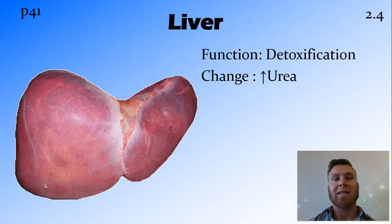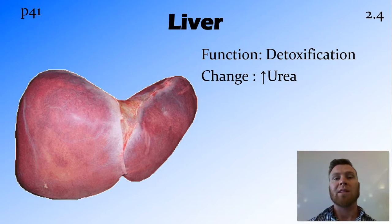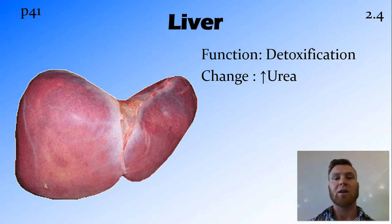The role of the liver is detoxification. All the processes that happen around the body — which in combination we refer to as metabolism — produce toxic metabolites. These are byproducts of chemical reactions that can be toxic if left in high quantities in the blood. The liver takes these toxic metabolites and catalyzes a reaction turning them into urea, a nitrogenous waste product that can be safely excreted. So we see an increase in urea production at the liver.